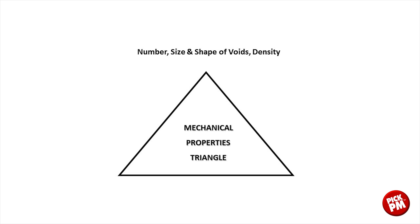Mechanical properties in powder metallurgy are developed starting with the number, size, and shape of the voids — or the density. The density of a part is the weight per unit volume, and density largely determines a lot about the properties of a powder metal component.